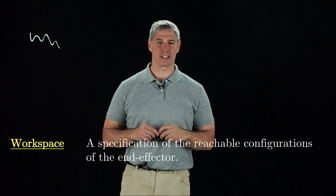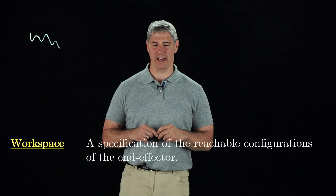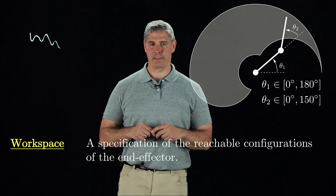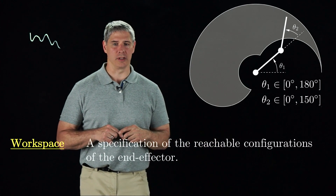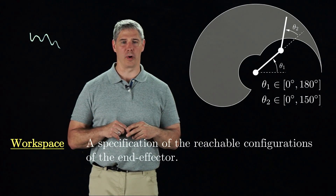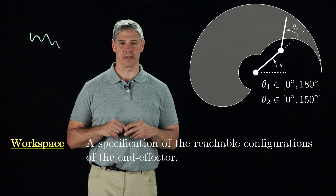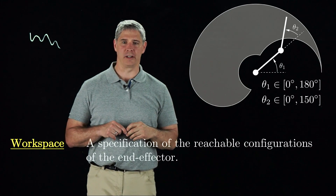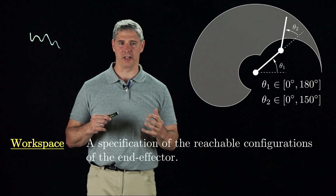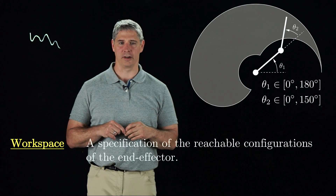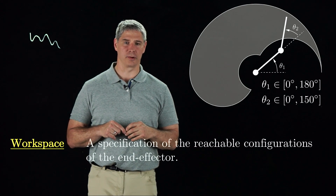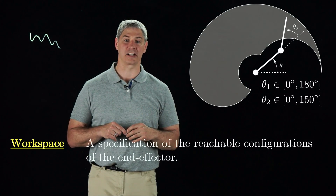The workspace is a specification of the configurations that the end-effector of the robot can reach, and has nothing to do with a particular task. For example, a planar robot with two revolute joints, limited to ranges of motion of 180 and 150 degrees, has the workspace shown here. The workspace is often defined in terms of the Cartesian points that can be reached by the end-effector, but it is also possible to include the orientation. The set of positions that can be reached with all possible orientations is sometimes called the dexterous workspace.